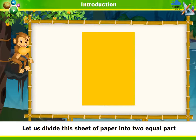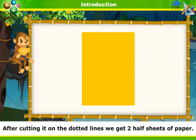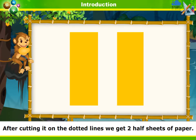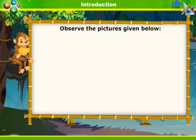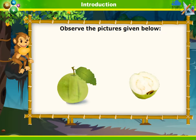Let us divide this sheet of paper into two equal parts. After cutting it on the dotted lines, we get two half sheets of paper.